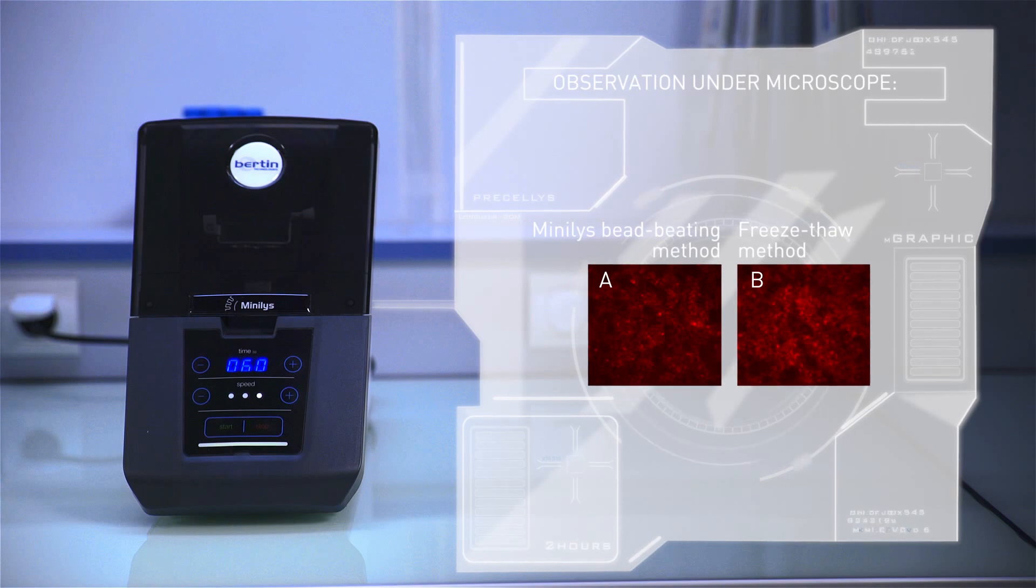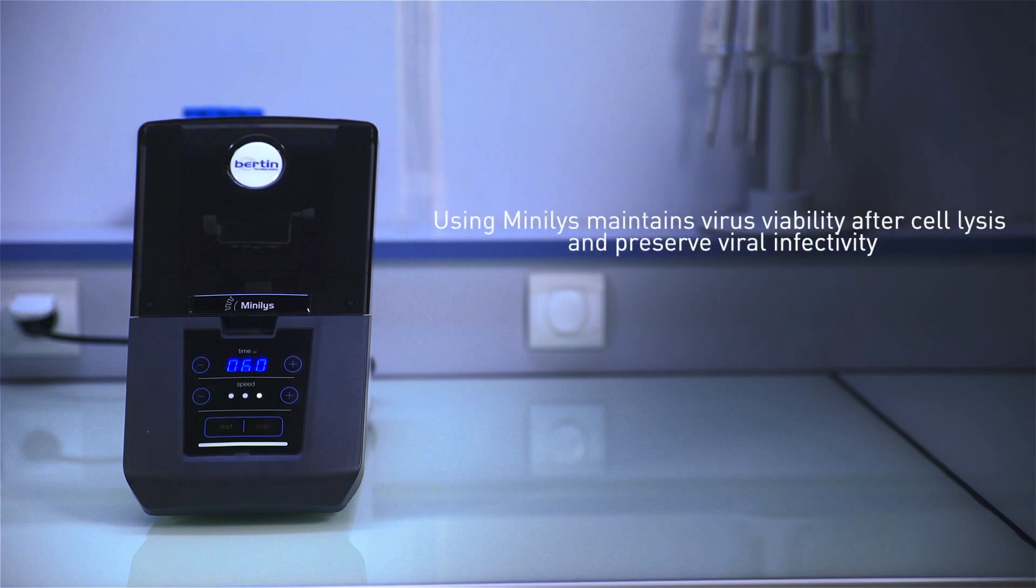The viral vector facility discovered that the Minilis offers an efficient way to release rAAV vectors without impairing viral infectivity and transduction efficiency. It's a better alternative to the previous method since it saves a significant amount of sample preparation time.